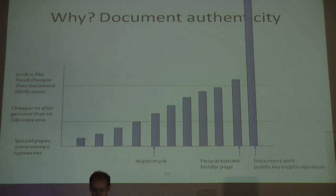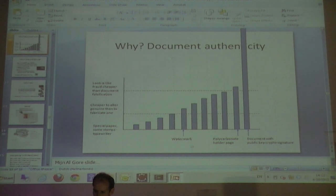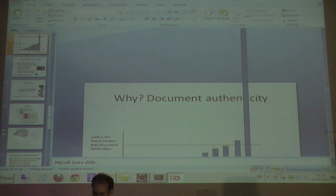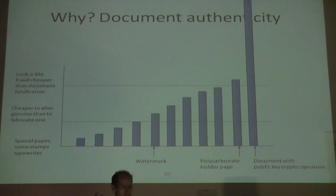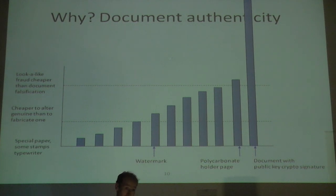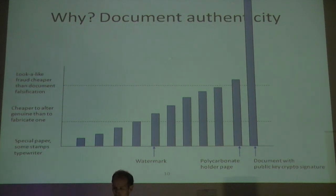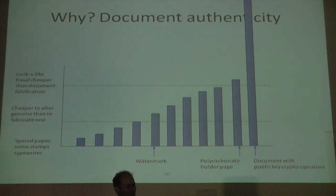At that point, they were afraid of look-alike fraud — drug traffickers would have a database of people, steal a passport, look for whoever resembles the person in it, and that agent would cross the border. Adding a digital signature makes it impossible to create illegal documents. The machine for personalizing passports is roughly the size of this room and costs around one million euros, so creating one is expensive, making fabrication very difficult.